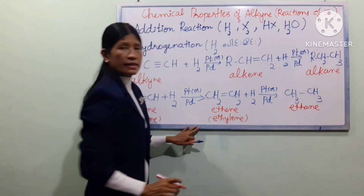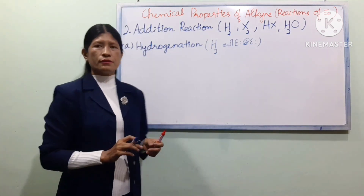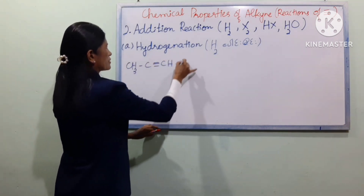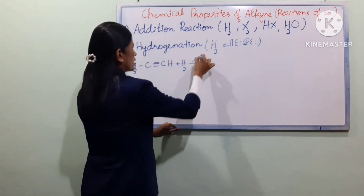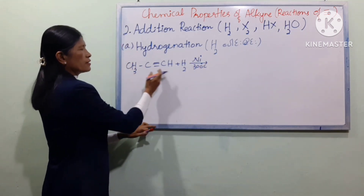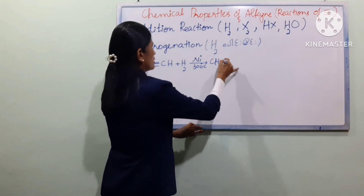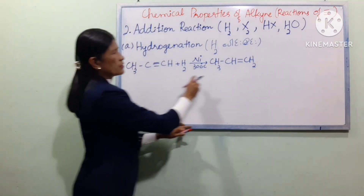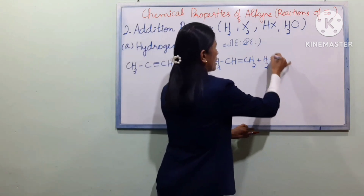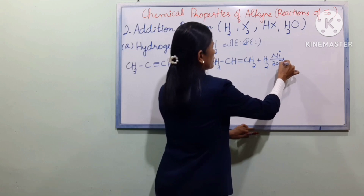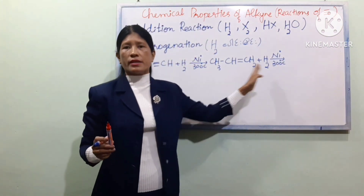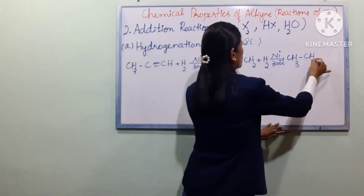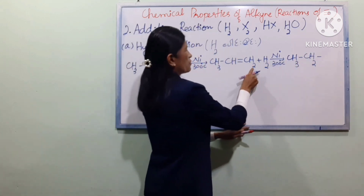For ethylene production, we add CH3–C≡C– plus H2 at 300 degrees Celsius. The product is a chain of CH3–CH2– groups, effectively converting the alkyne to an alkane by adding hydrogen across the triple bond.